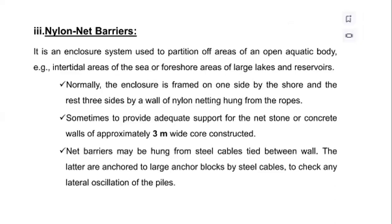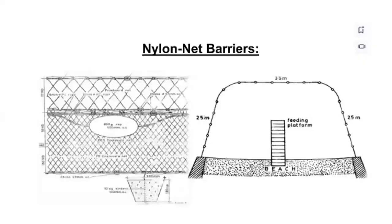The third type is a nylon net barrier. It is the enclosure system used to partition an area of the aquatic body, that is the intertidal area of the sea or foreshore area of a large lake or reservoir. Normally the enclosure is framed on one side by the shore, and on the other three sides by walls of nylon netting hung from ropes. Sometimes, to provide adequate support for the net, a stone or concrete wall of approximately three meters wide is constructed. The net barrier may be hung from steel cables tied between walls and anchored to large anchor blocks by steel cable to check any lateral oscillation of the pile. Here is an example of a nylon net barrier that can be used in pen culture.